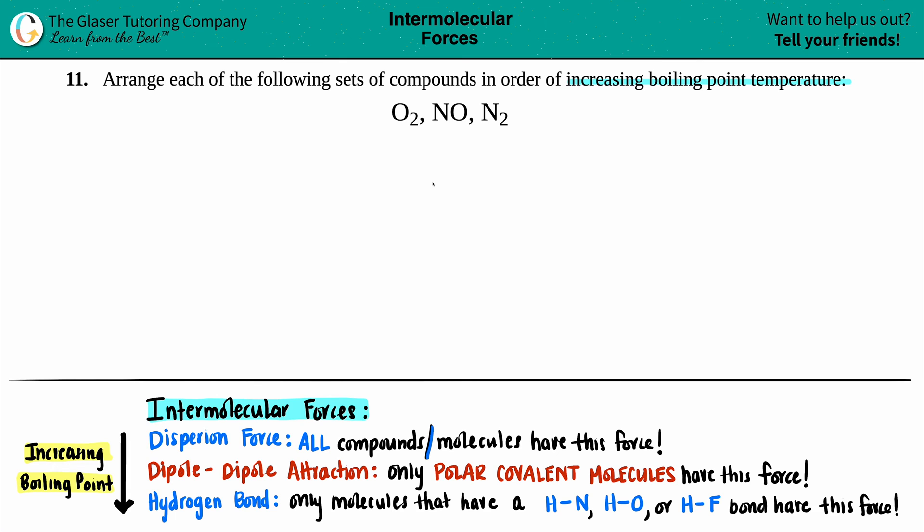All right. So especially if they give you covalent molecules, which are molecules that contain only nonmetals, which are the three here, oxygen and nitrogen are both nonmetals, and they're asking you to rank via increasing boiling point or decreasing boiling point. The idea here is boiling point. Just know that they're secretly trying to make you list out the intermolecular forces that these molecules have. So by them just saying to rank them by boiling point, I know that I have to see what intermolecular forces are here. Because the more intermolecular forces that you pick up, the higher the boiling point.